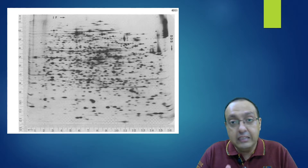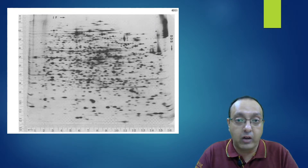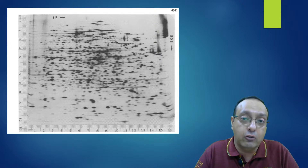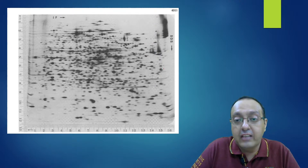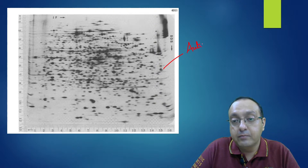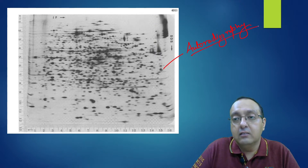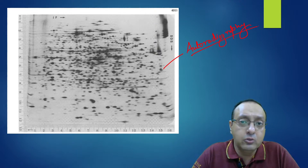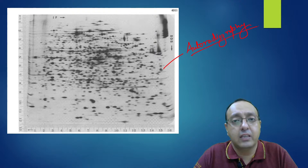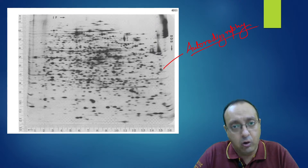In the earlier days — we're talking about the 1970s when this technique was originally developed — the proteins were visualized using autoradiography. The proteins were labeled using radioisotopes and then visualized on the gel using autoradiography.